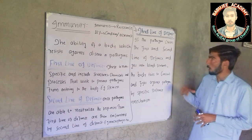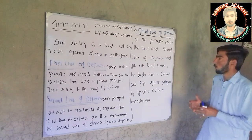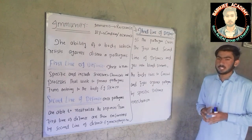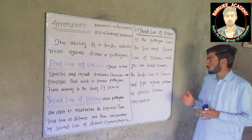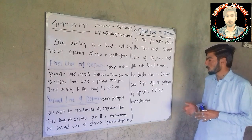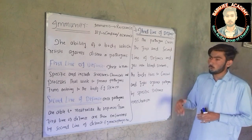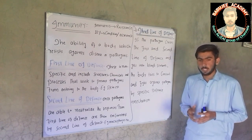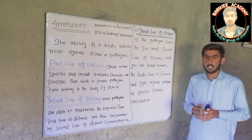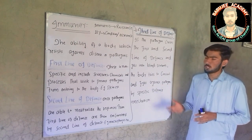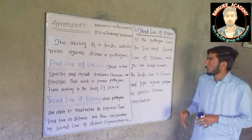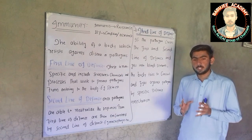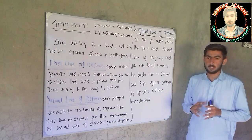Third line of defense: if pathogens cross the first and second line of defense and get into the bloodstream, the body tries to control and fight against pathogens by a specific defense mechanism. The third line of defense tries to prevent these pathogens from causing disease. Third line of defense is a specific mechanism, which means that it can differentiate between specific microorganisms.